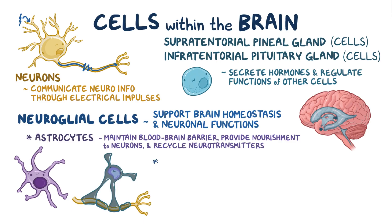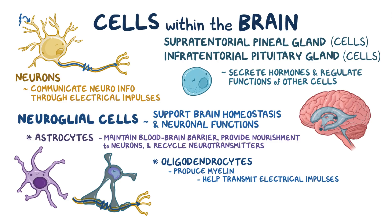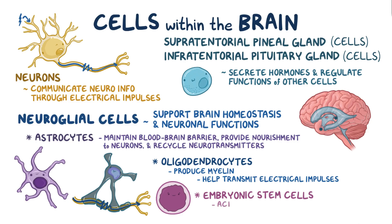Another type of glial cell is the oligodendrocyte, which has a few cellular processes that look like branches. They're mostly found in the brain, though they are in the spinal cord too. These branches wrap themselves around neurons and produce a fatty substance made of lipoproteins called myelin, which helps transmit electrical impulses along the axons. Some brain cells have a limited ability to be replaced, especially during injury, by having undifferentiated stem cells — called embryonic stem cells — activate and mature into specialized cells.